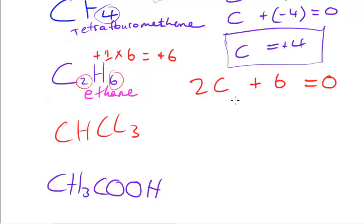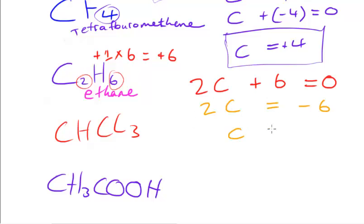If we subtract 6 from both sides we get 2C = −6. Then we divide both sides by 2, giving us carbon = −3. So the oxidation number of carbon in C2H6 (ethane) is minus 3.